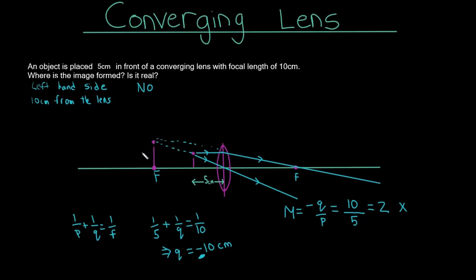Typically for these problems: if the object is outside of the focal length, the image forms on the right-hand side and is inverted. But if the object is inside the focal point, as in this problem, then the image forms behind and is usually larger — and it is a virtual image.